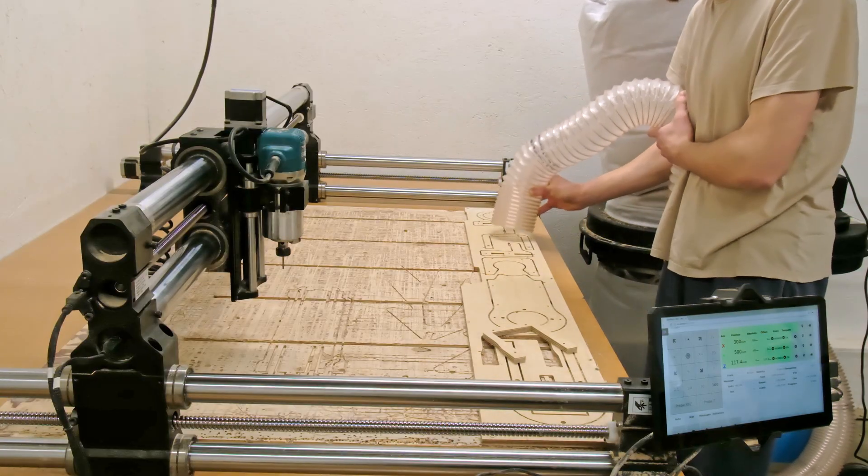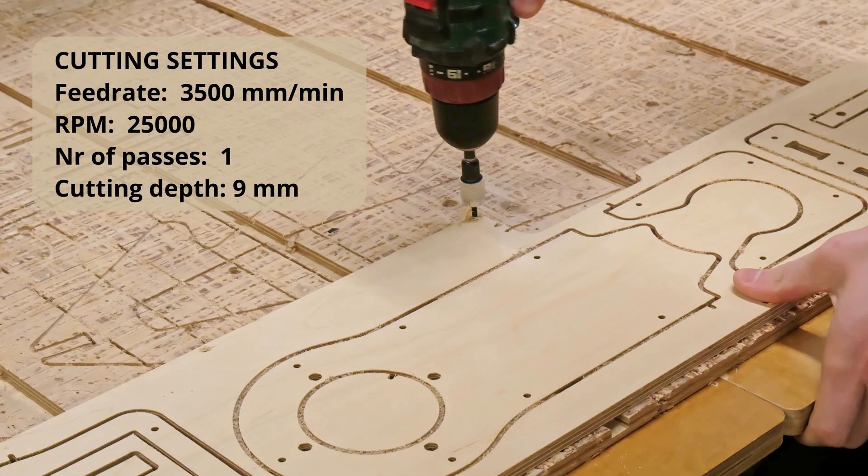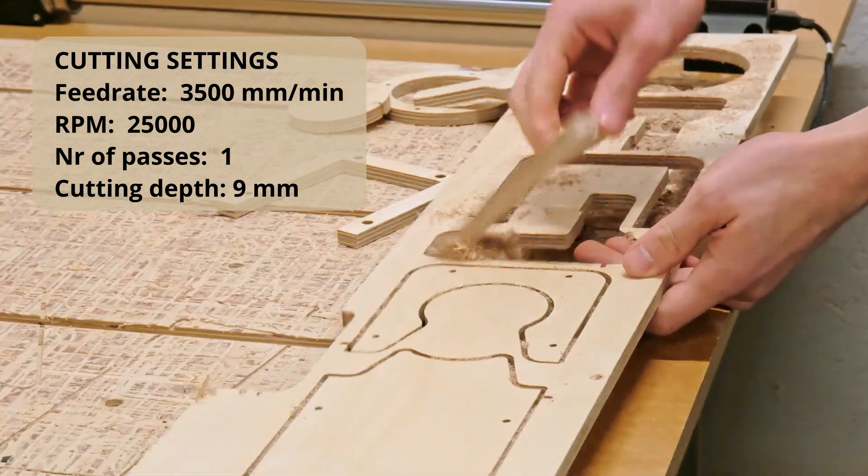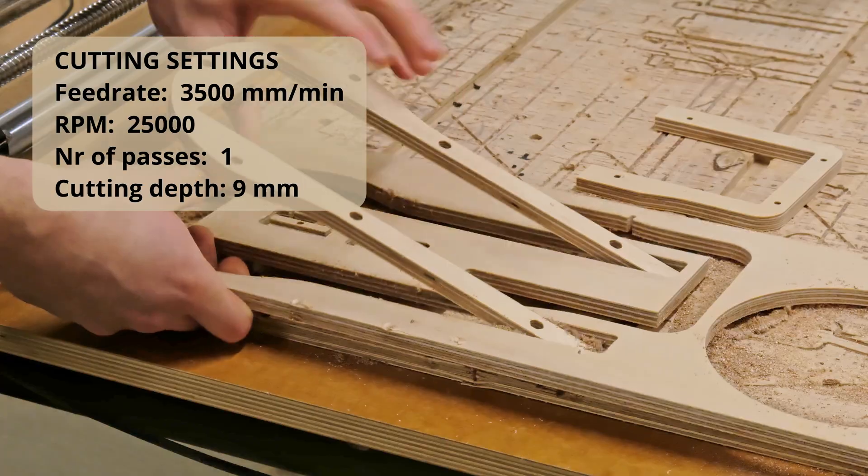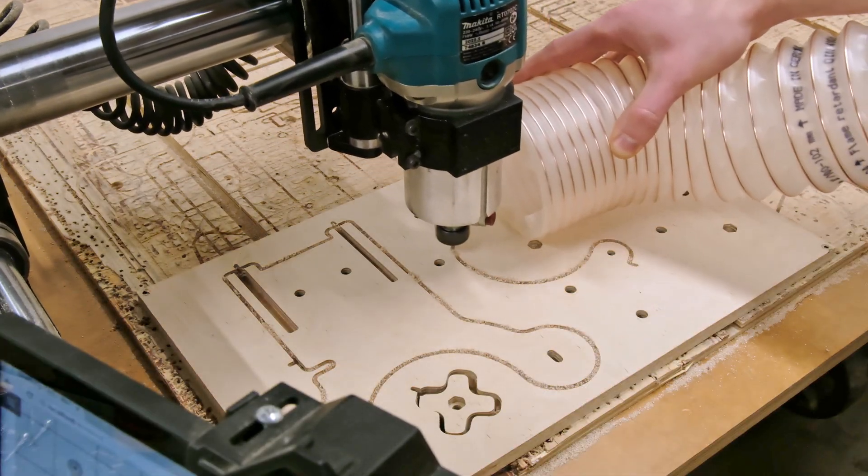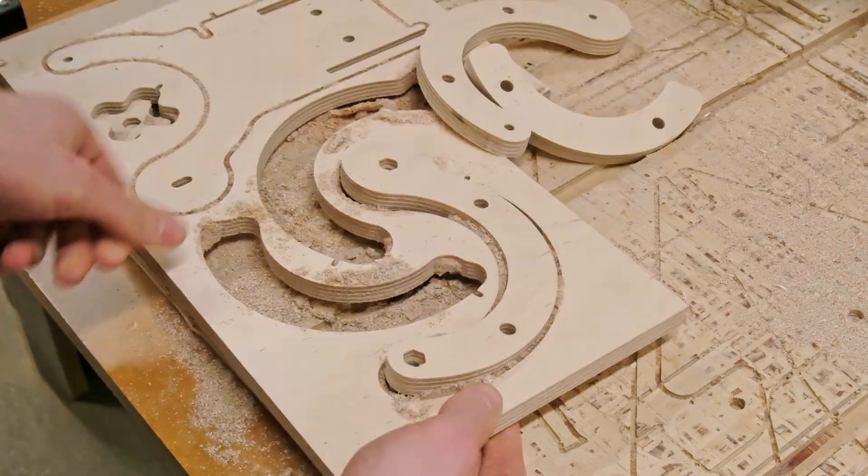The cut settings we are using for the parts allow us to skip using the support tabs for almost all parts except the small mounting components, allowing us to simply pop the components out of the sheet after the cuts are completed.